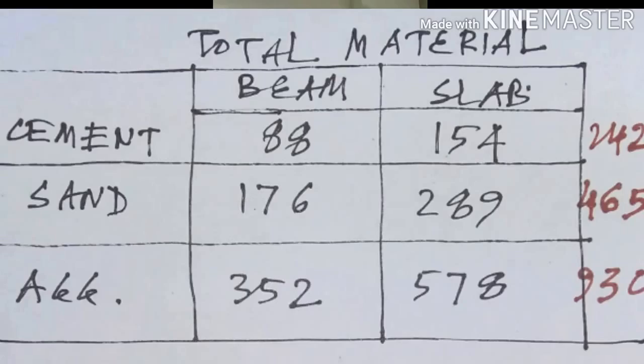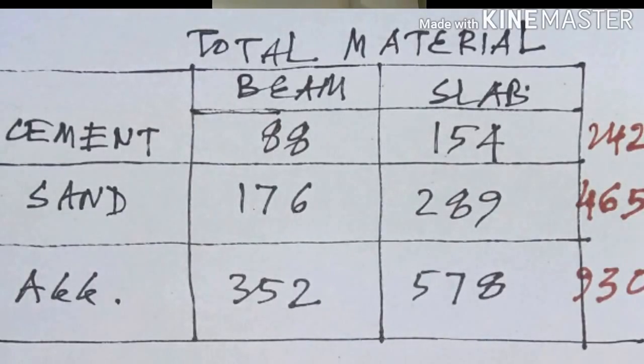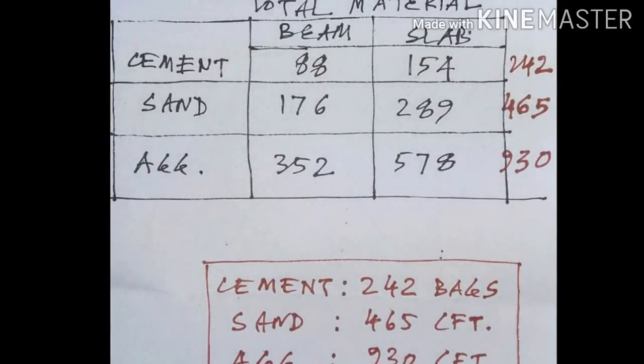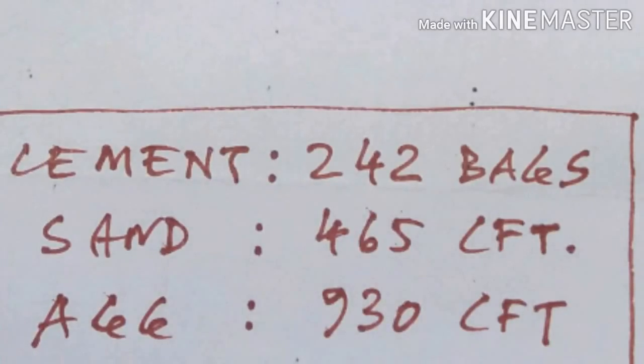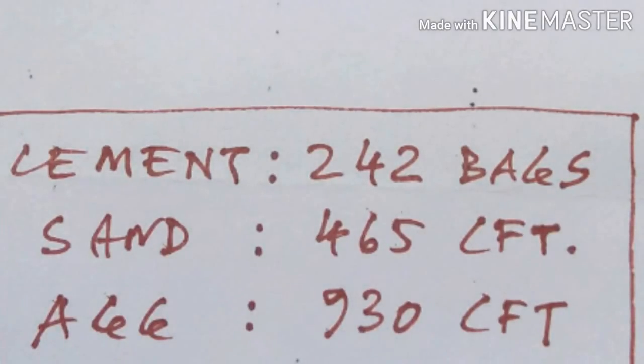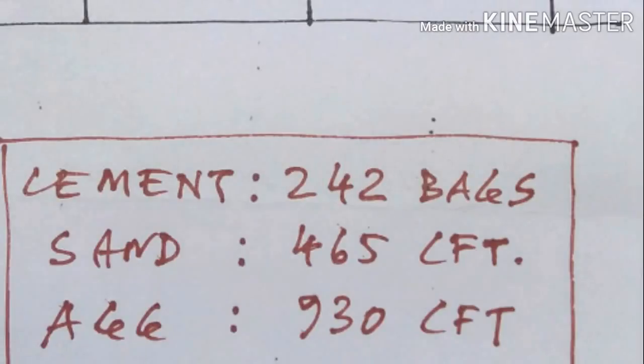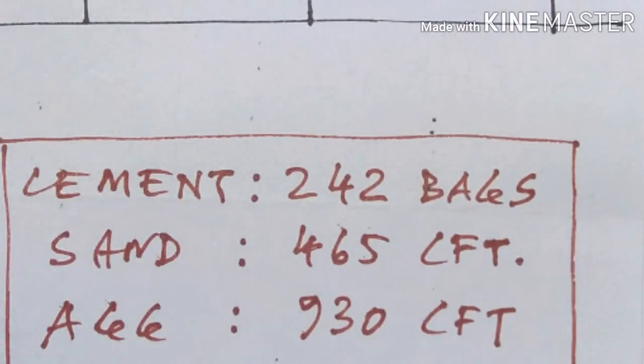Now I have an abstract table combining slab and beam totals. Total cement required: 242 bags. Total sand: 465 cft, which is 4.65 brass. Total aggregate: 930 cft, which is 9.3 brass.